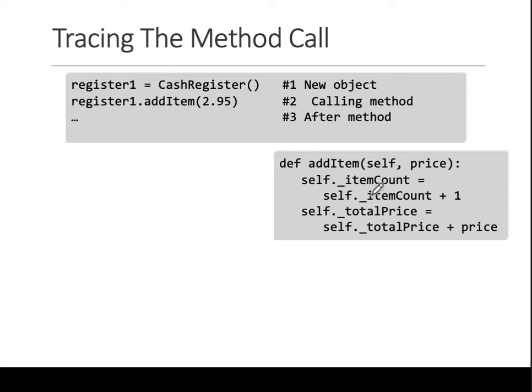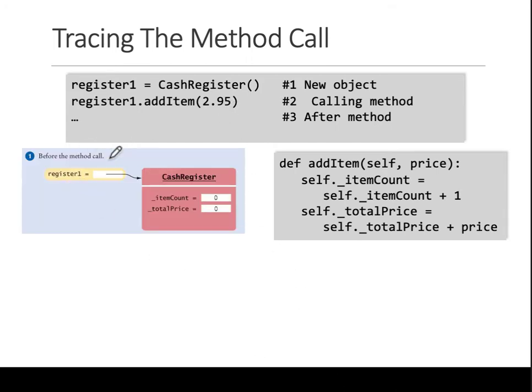For example, if this is our function addItem, we are getting a price. First we are increasing the item count, and we are setting the total price to be whatever it was plus the new one. Let's say addItem is called - what should happen?